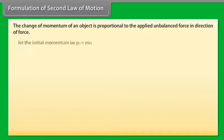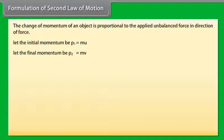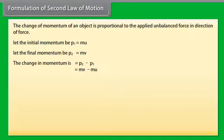Let the initial momentum be P1, which is equal to MU. Let the final momentum be P2, which equals MV. The change in momentum is P2 minus P1, which equals MV minus MU.